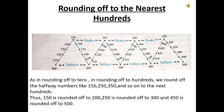The numbers which are at the peaks are 150, 250, 350, and 450. The numbers which are at the valleys are 100, 200, 300, 400, and 500.